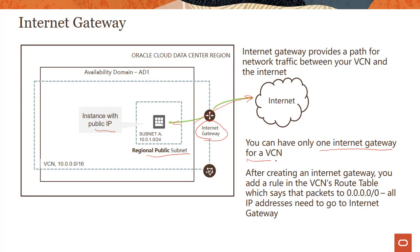You can only have one internet gateway for a VCN. So if you have different public subnets — for example, one hosting your bastion servers, one for web servers, one for something else — all of them are part of your single VCN and go through the one internet gateway available for the VCN. As we saw in the previous slide, after creating an internet gateway you need to add a rule in the VCN's route table saying packets to 0.0.0.0/0 need to go to the internet gateway. Once you add that rule and have a web server, you can start communicating to it.